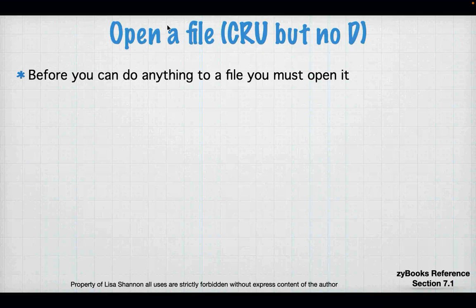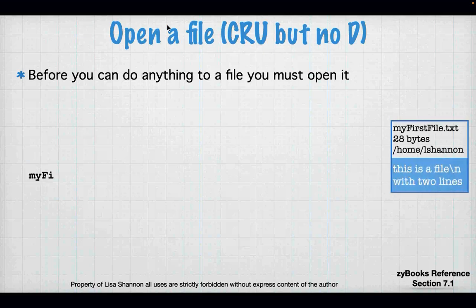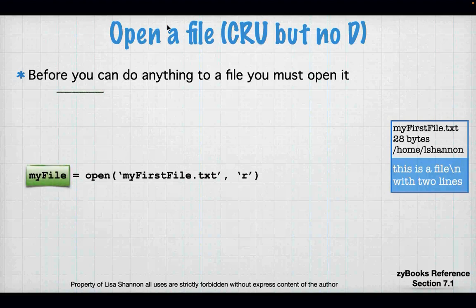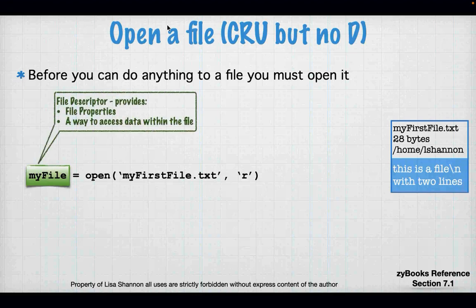To open a file we can create, read, and update — but no delete. Before we do anything, we have to open a file using the `open` function. The way this works: I have a variable on the left-hand side of the equals sign, and on the right-hand side there is a function called `open`. We are not using dot notation for files — these functions are much more global.